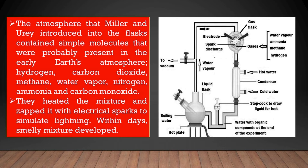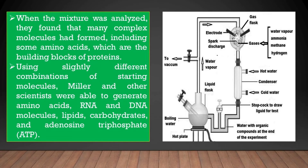They heated the mixture and zapped it with electrical sparks to simulate lightning. Within days, a smelly mixture developed. When the mixture was analyzed, they found that many complex molecules had formed, including some amino acids, which are the building blocks of proteins. Using slightly different combinations of starting molecules, Miller and other scientists were able to generate amino acids, RNA and DNA molecules, lipids, carbohydrates, and adenosine triphosphate (ATP).